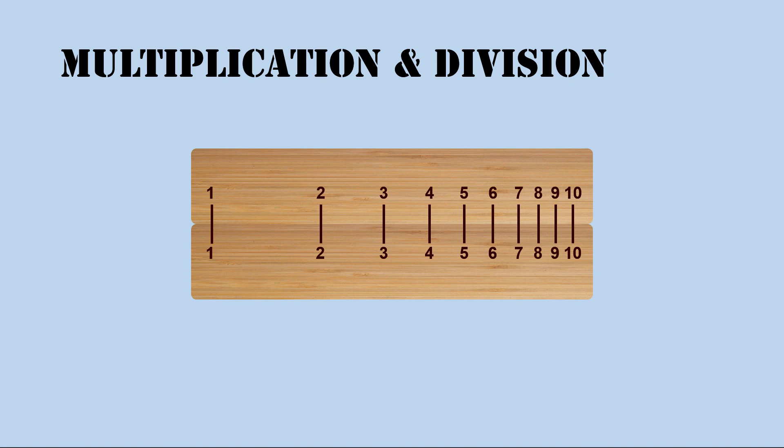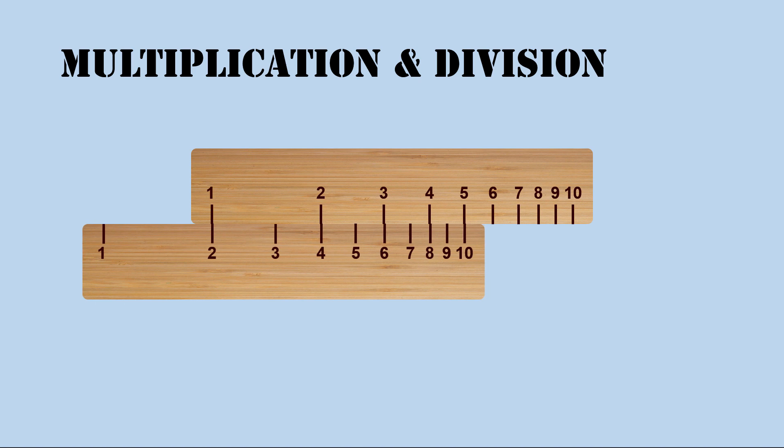To multiply by 2, align the 1 on the top ruler with the 2 on the bottom ruler. Simply by selecting any number on the top ruler, we can find the answer to that number multiplied by 2 on the bottom ruler.